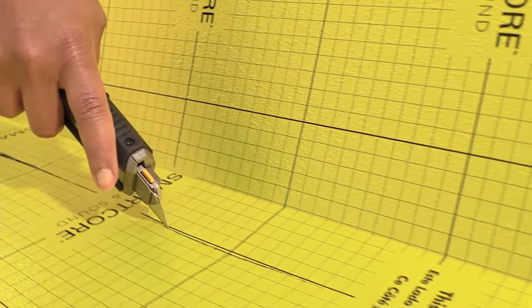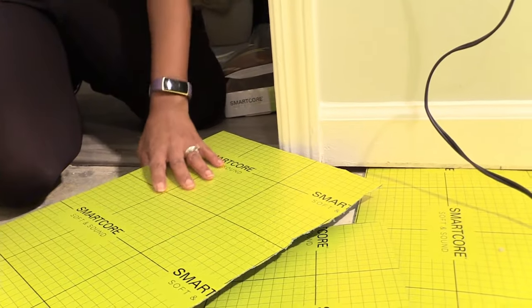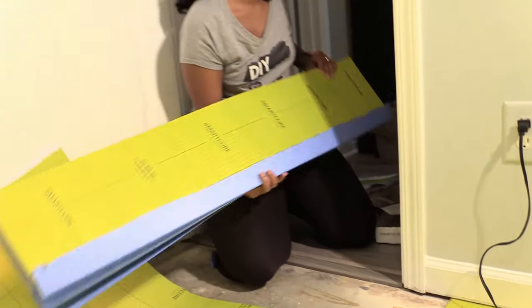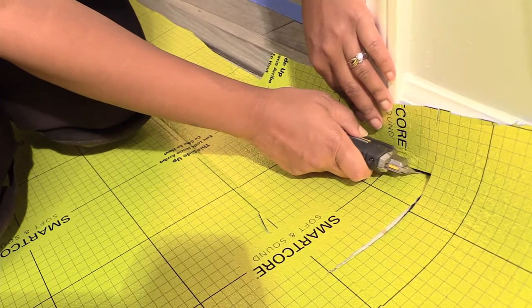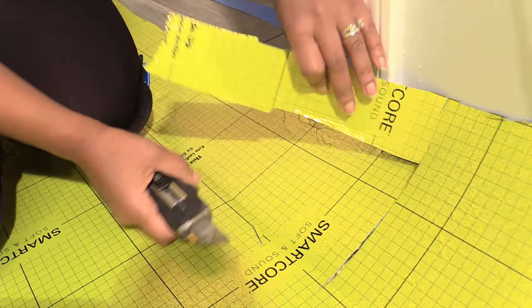When you're cutting edges, you don't have to worry about the lines being perfect. What matters is that the subfloor is completely covered. For us, this made the project stress-free.